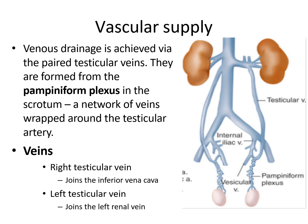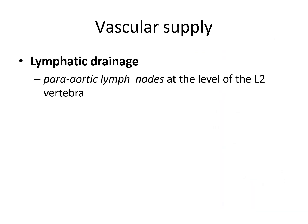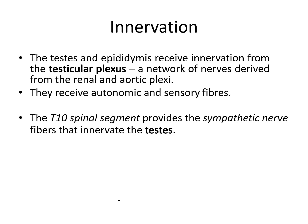Remember the pampiniform plexus — it has clinical correlation. About lymphatic drainage: it drains into the para-aortic lymph nodes at the level of L2. About innervation: the testis receives innervation from the testicular plexus, receiving both autonomic and sensory fibers. The sympathetic nerve fibers come from the T10 spinal segment.